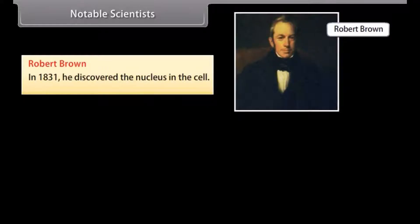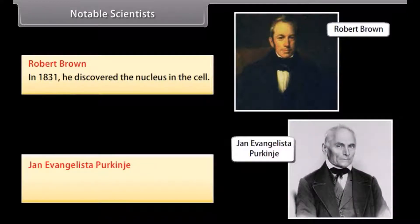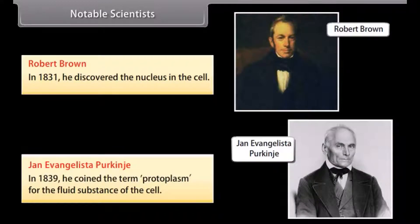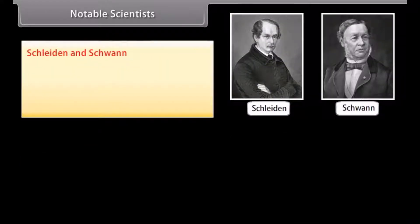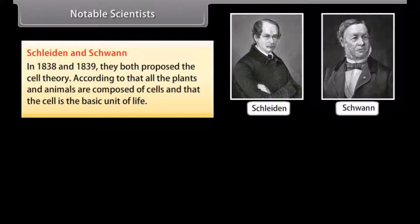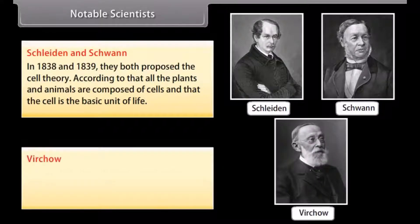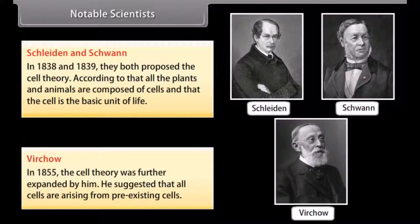Notable scientists: Robert Brown in 1831 discovered the nucleus in the cell. Jan Evangelista Purkinje in 1839 coined the term protoplasm for the fluid substance of the cell. Schleiden and Schwann in 1838 and 1839 both proposed the cell theory, according to which all plants and animals are composed of cells and that the cell is the basic unit of life. Virchow in 1855 further expanded the cell theory, suggesting that all cells arise from pre-existing cells.